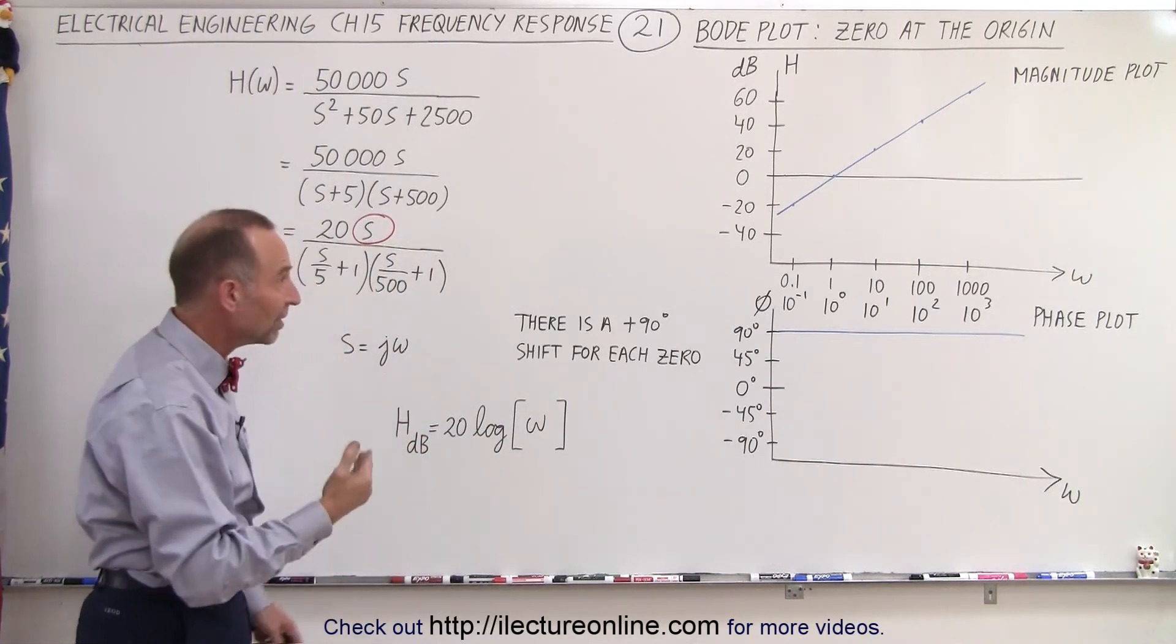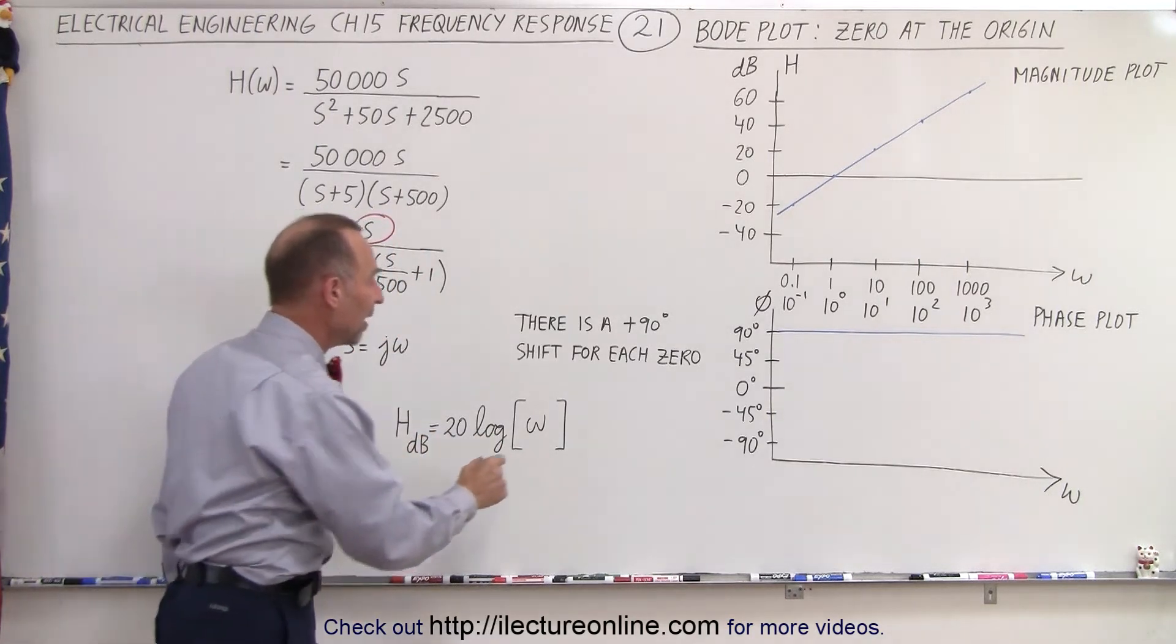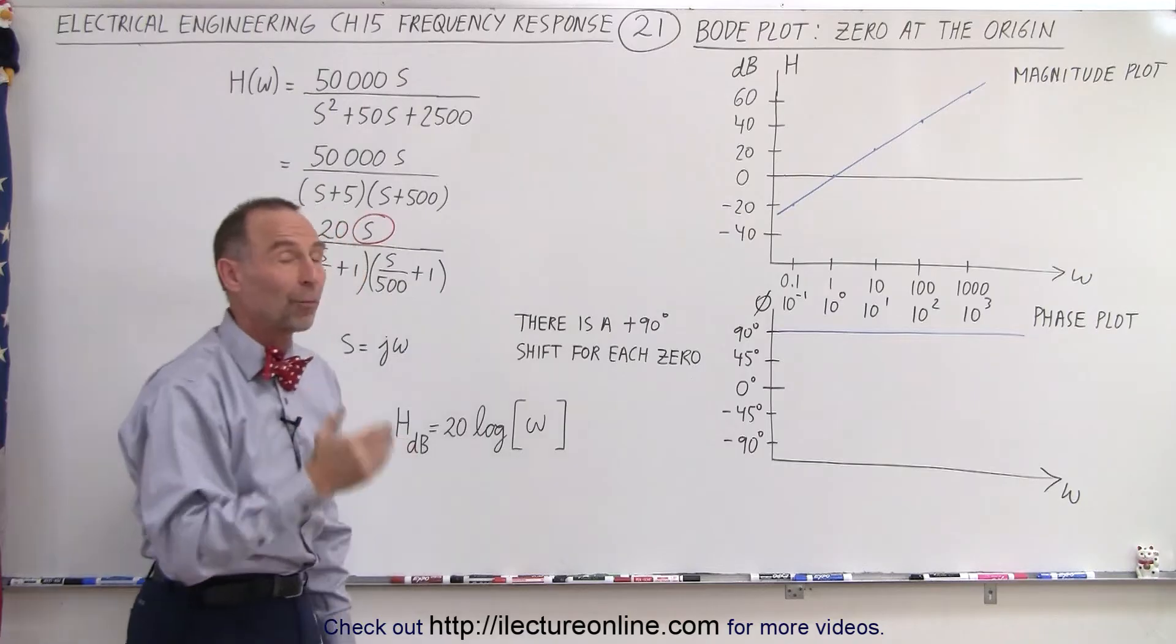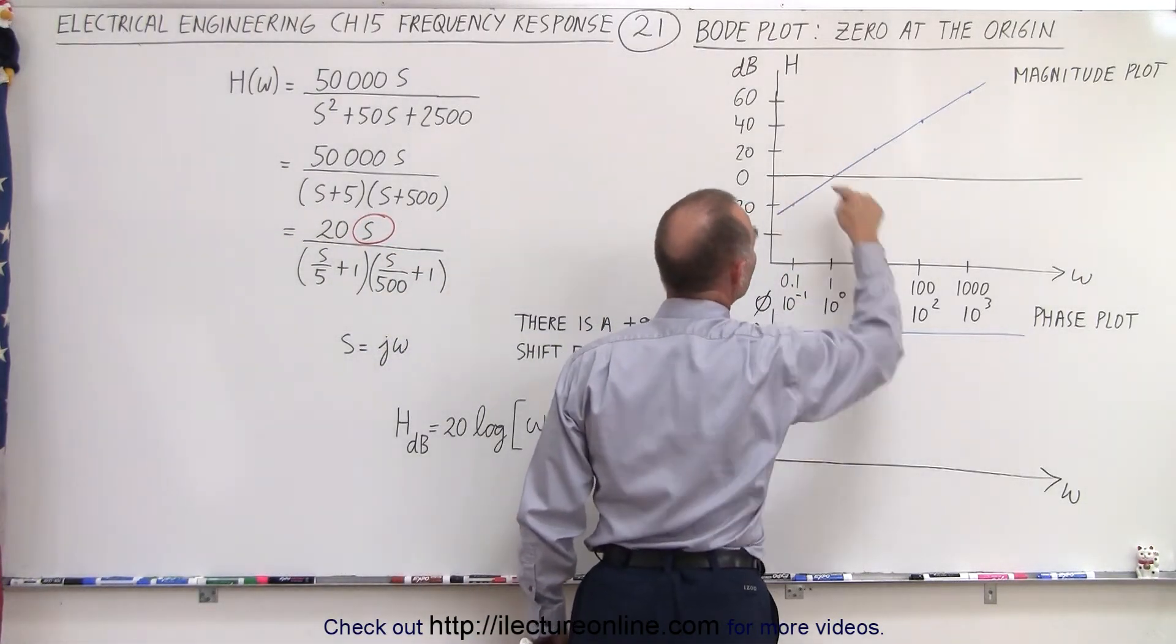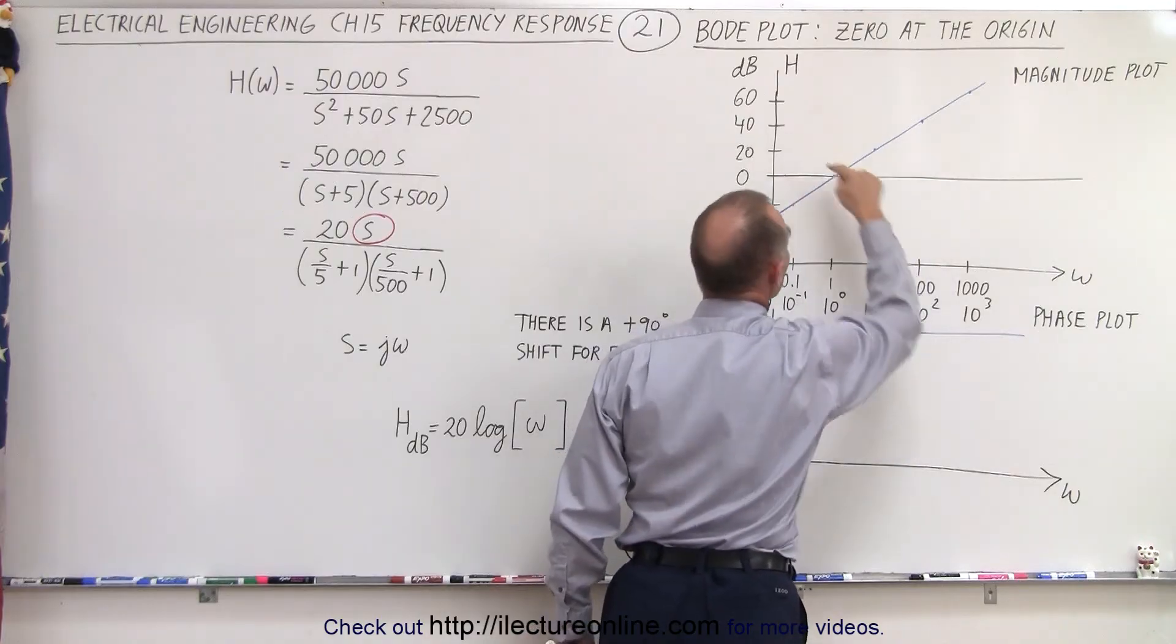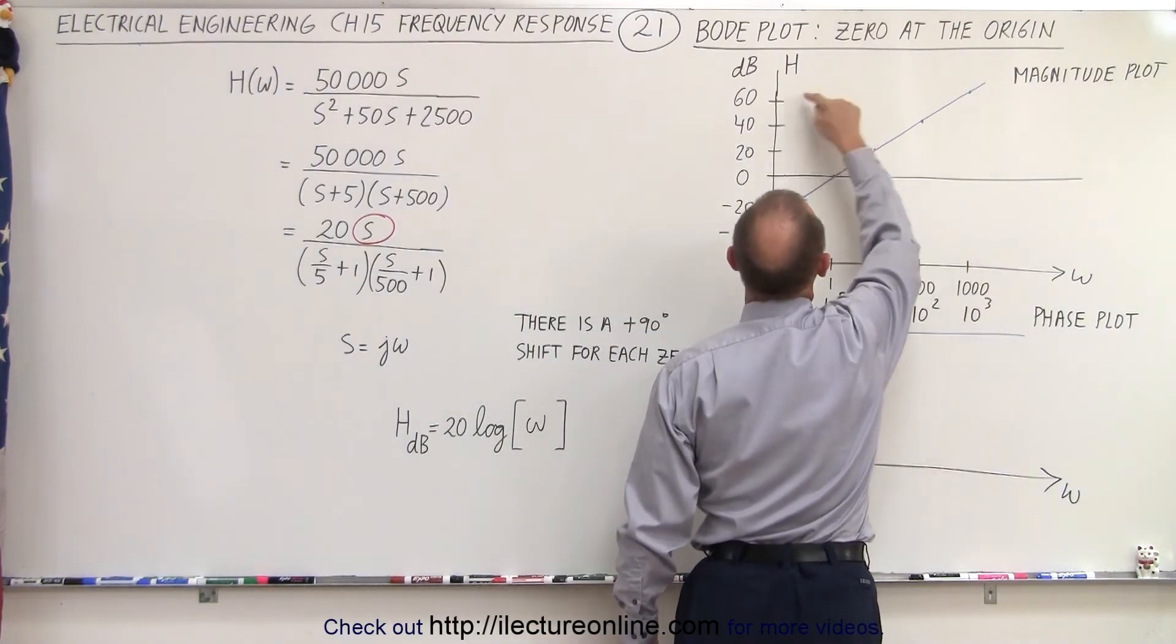And then of course there's a 20 dB increase for every decade increase for omega. So when omega goes from 1 to 10 at that point we're at 20 dB. When it goes to 100 we're at 40 dB. When we go to 1,000 we go to 60 dB.